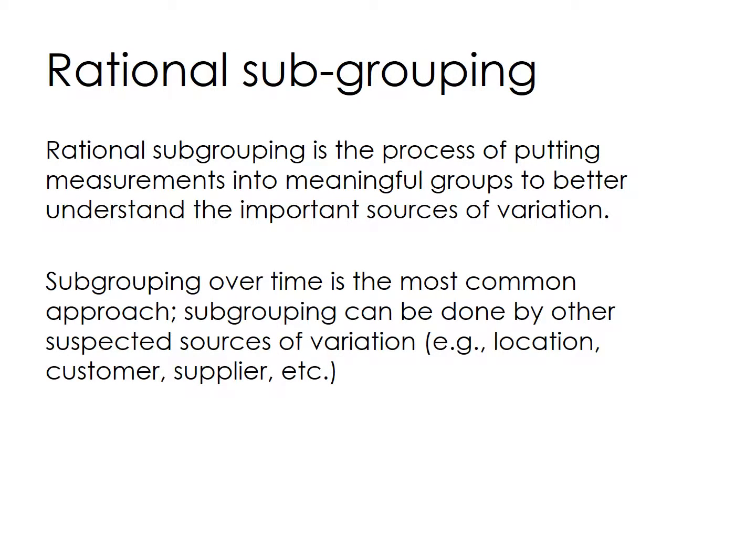Rational subgrouping is a process of putting measurements into meaningful groups to better understand the important sources of variation. Same as systematic sampling, rational subgrouping is typically used in process sampling situations when data is collected in real time during process operation. It involves grouping measurements produced under similar conditions, sometimes called short-term variation.